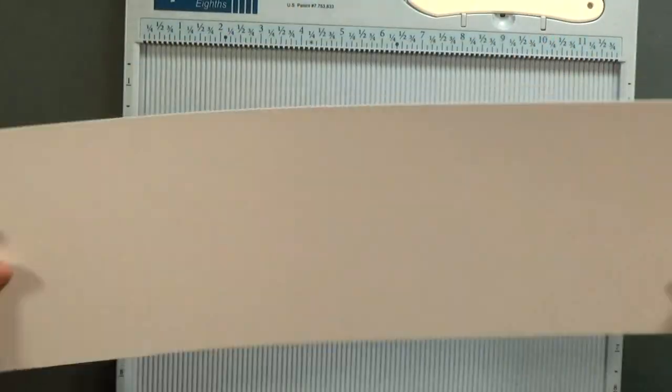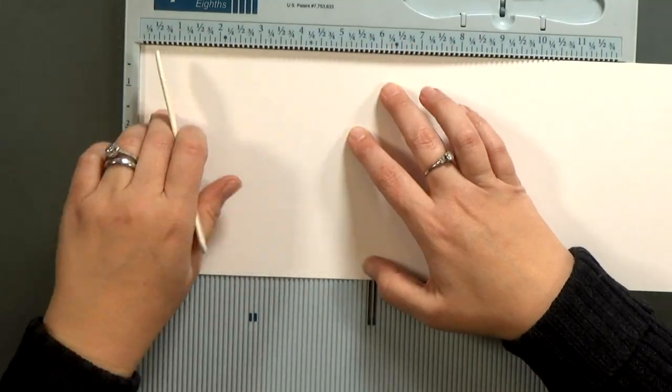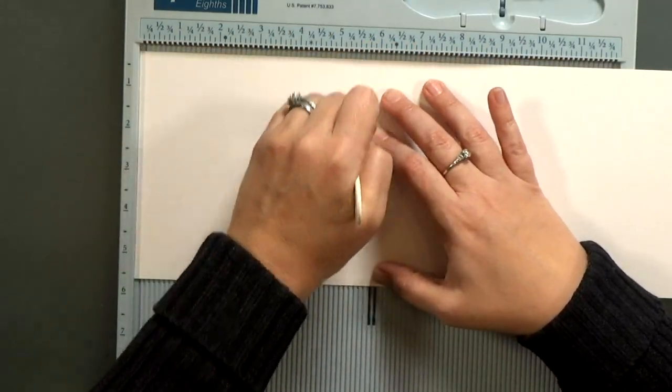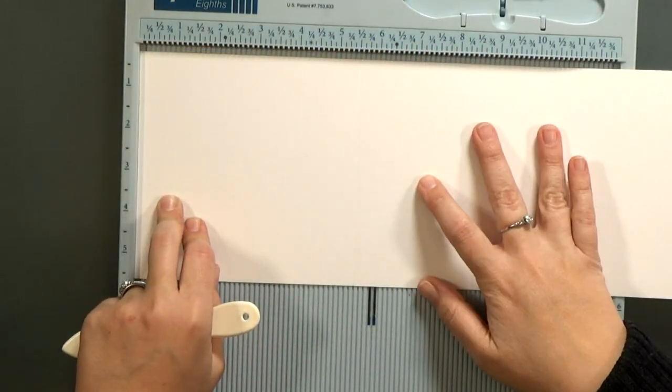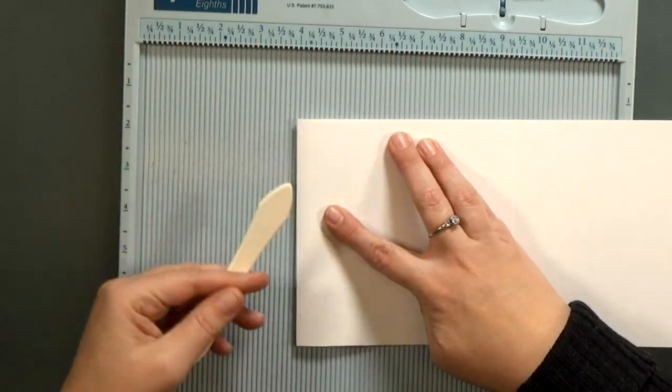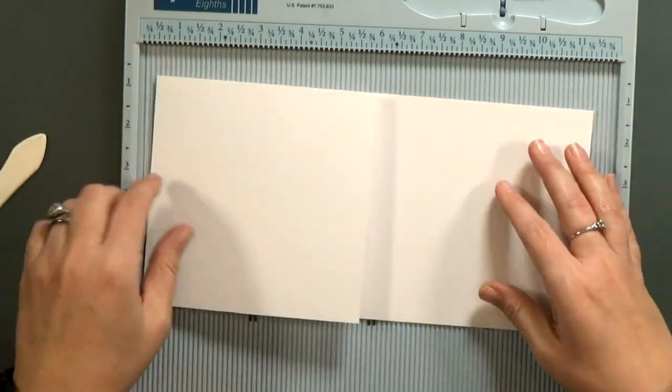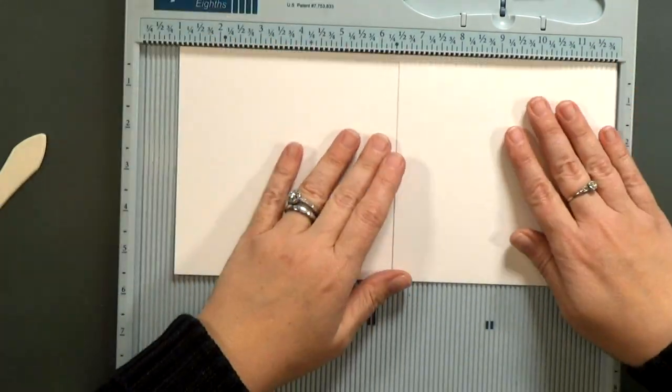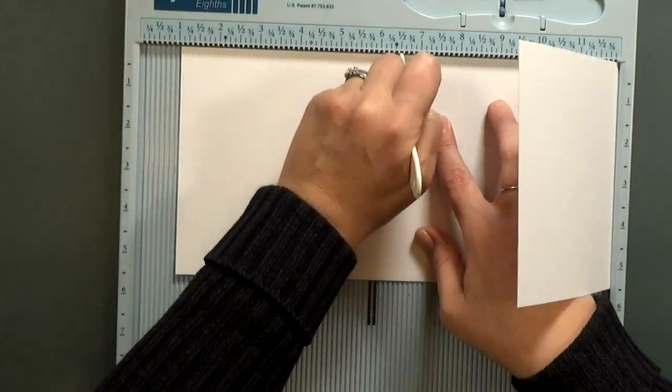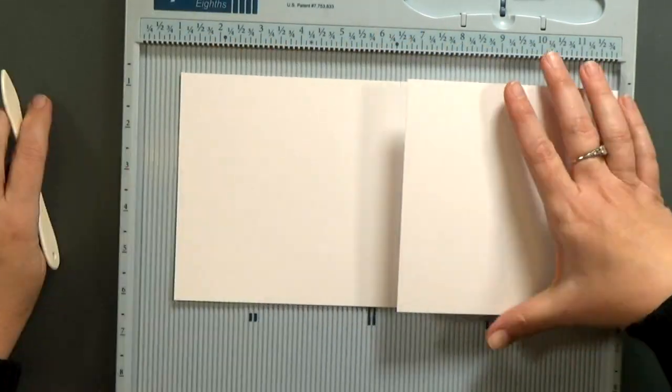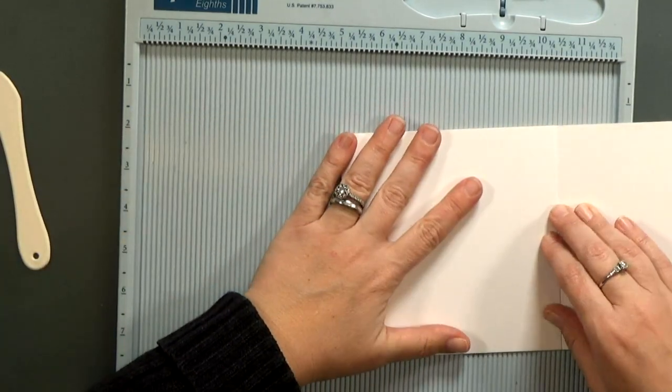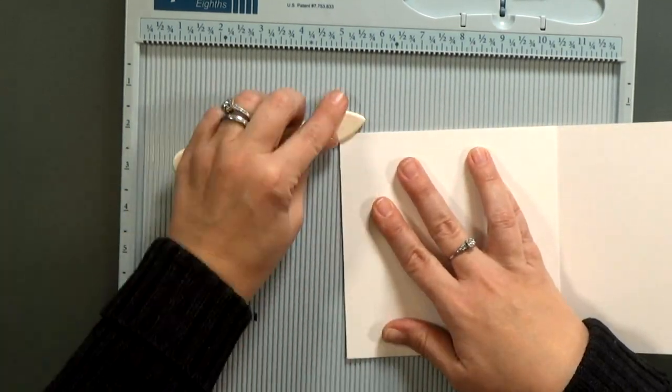Now it's time to work on the card base. I've got a five and a half by sixteen and a half inch piece of cardstock and I'm going to score it at five and a half inches from either end to make a square tri-fold. If you can't find oversized cardstock like this you can always cut two five and a half by eleven inch pieces and then overlap them in the middle and glue them together.